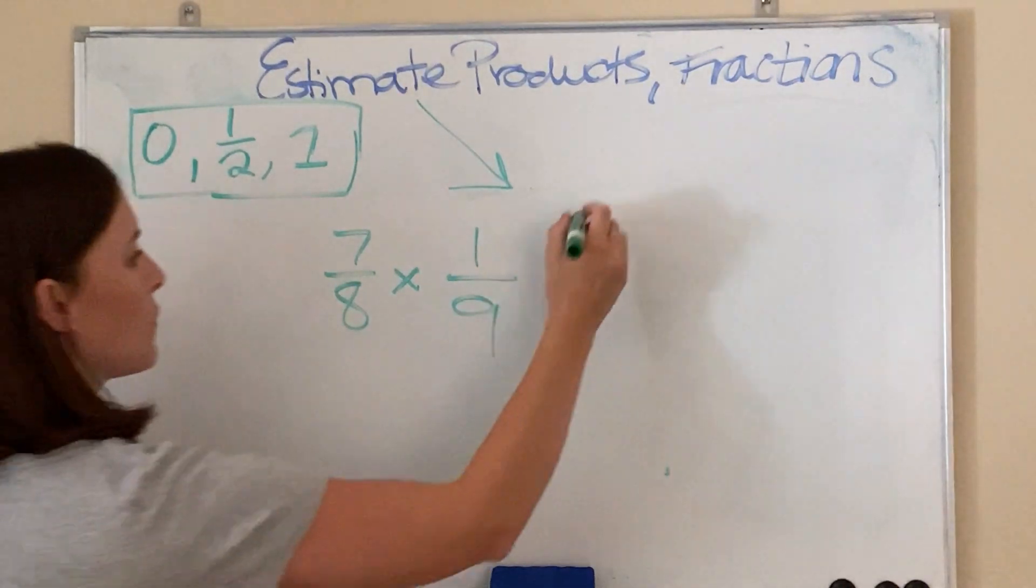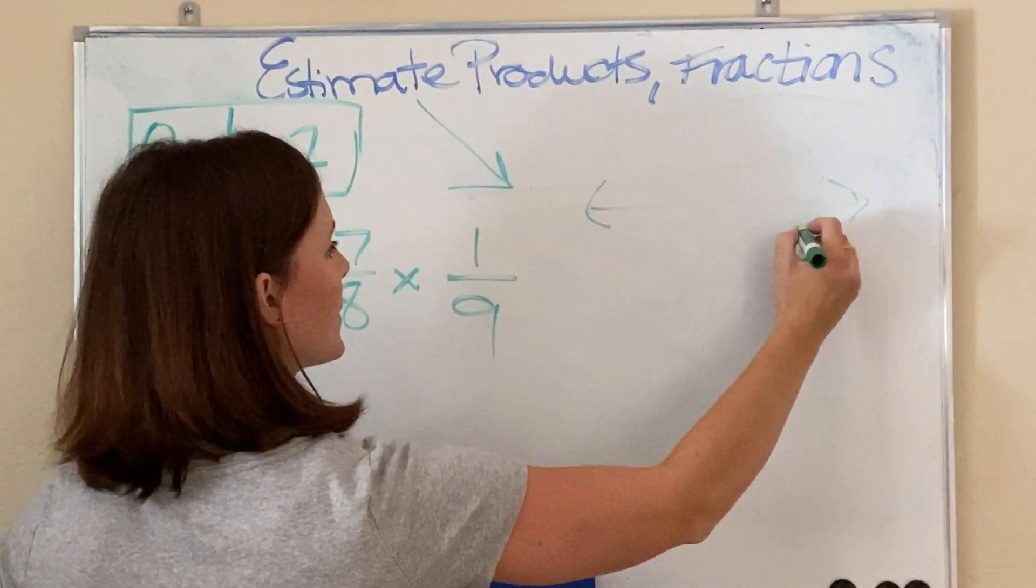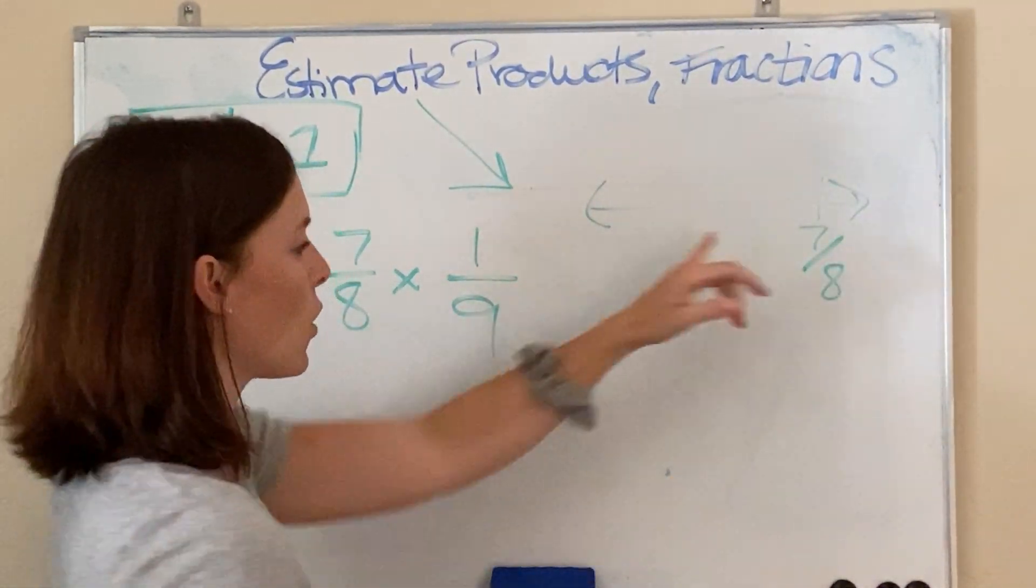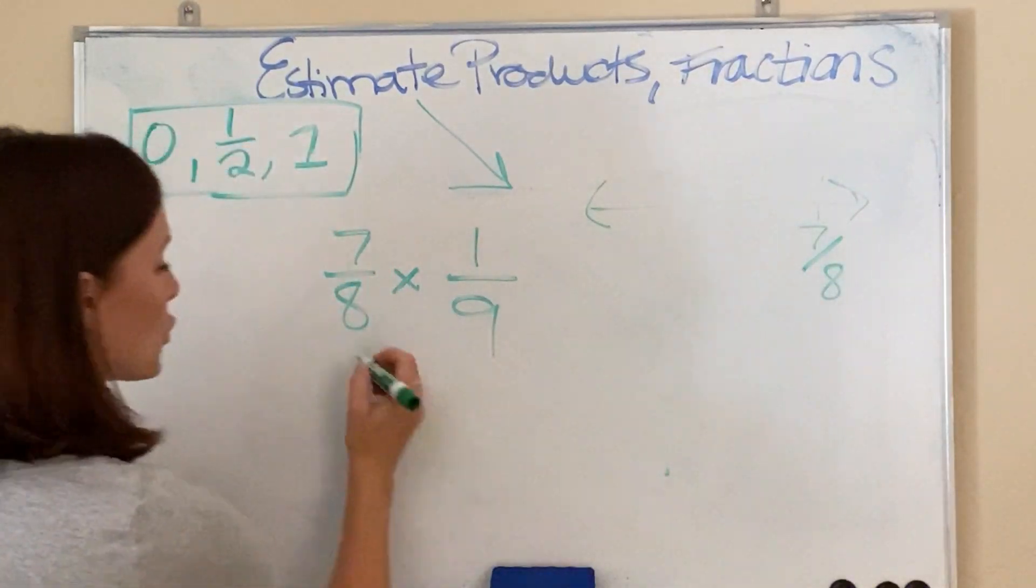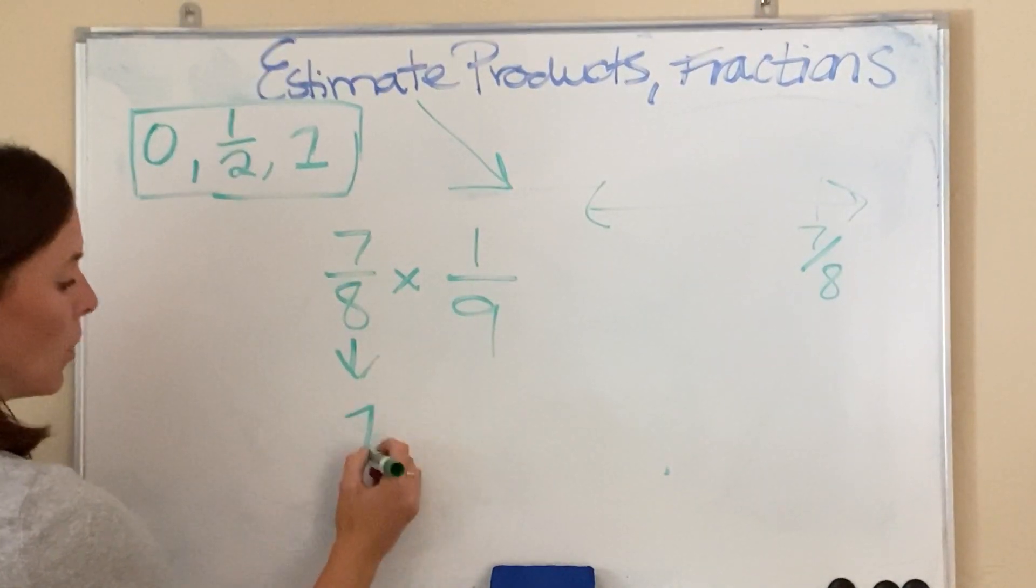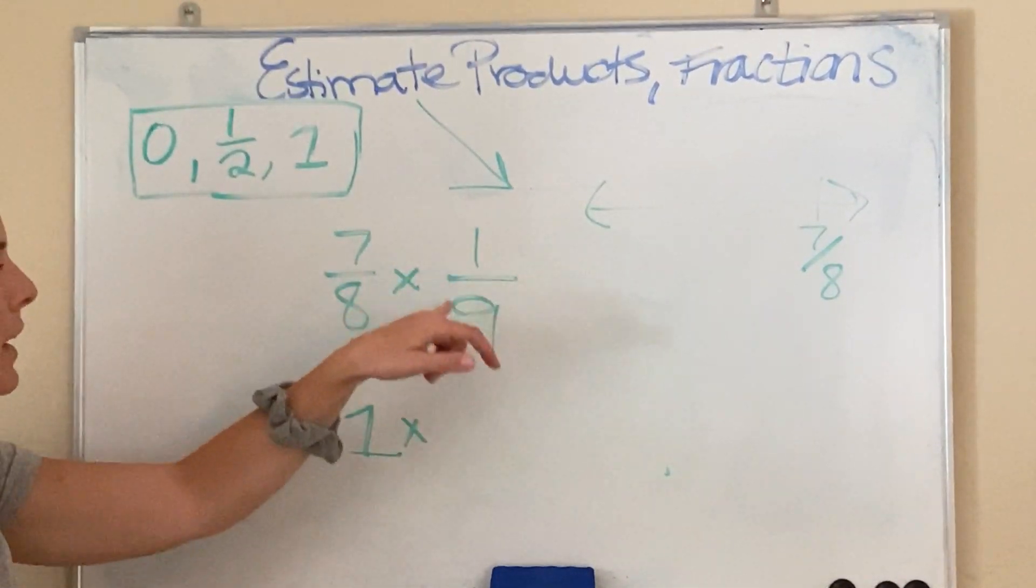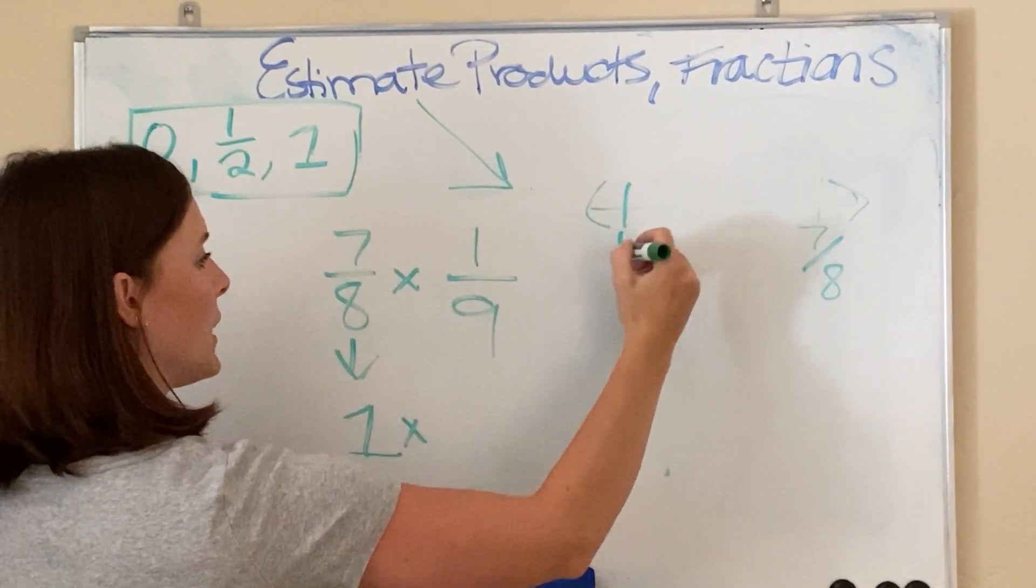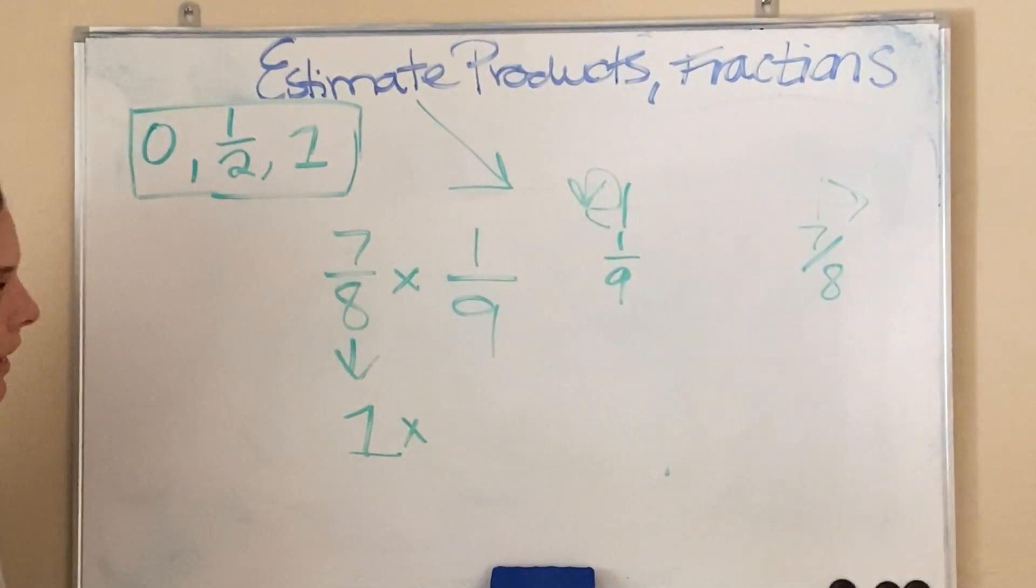Now, remember how we were doing this. If you think of a number line, 7/8 is going to be way over here because it's almost to 8 out of 8. So, I know this is going to round to a whole. And then 1 out of 9 would be way over here because that's really close to 0 out of 9.